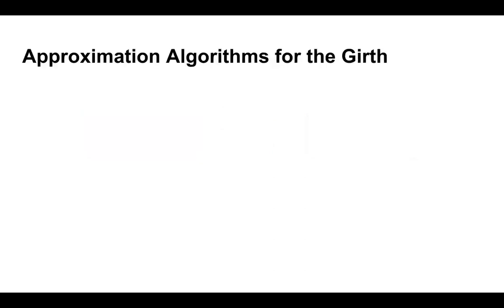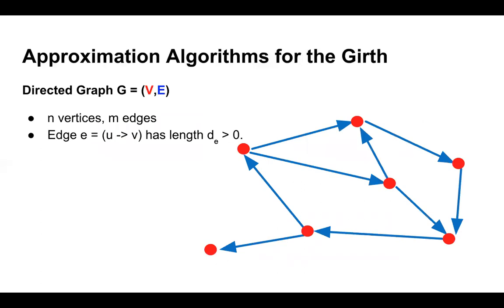The setting we'll be working in is a directed graph with n vertices, m edges, and every edge has a positive length. The girth of a graph is defined to be the minimum length cycle in the graph. In this graph, the girth is 4, as given by the cycle shown. It's very natural to want algorithms for computing the girth.